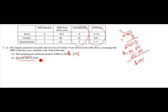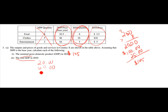For real GDP — some of you made this more complicated than it was. All we're going to do is take the 2010 quantity and use the 2009 price. The 2009 quantity is irrelevant. So: 250 times 8 is $20; 6 times 10 is $60; 4 times 5 is $20. That gives us 20 plus 60 plus 20 equals $100. So $100 is the answer for real GDP.